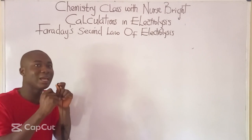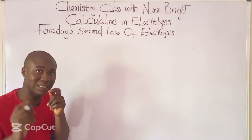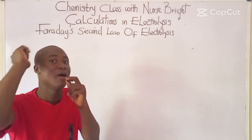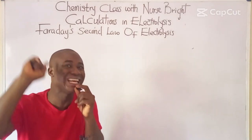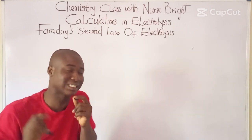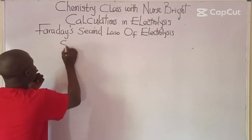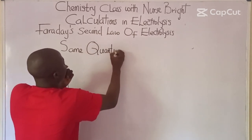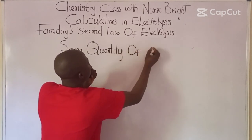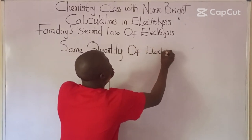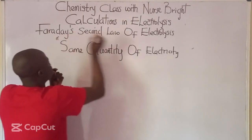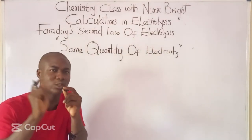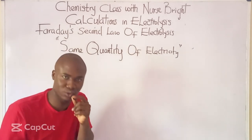When solving questions on Faraday's second law of electrolysis, there is a phrase that must appear in the question. That phrase is: 'the same quantity of electricity.' Whenever I see this phrase in an electrolysis question, I know the question is on Faraday's second law of electrolysis.